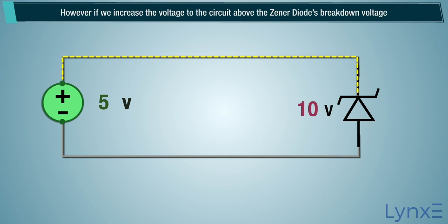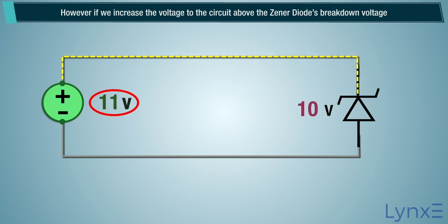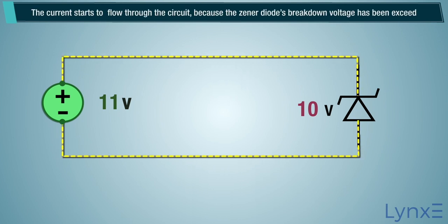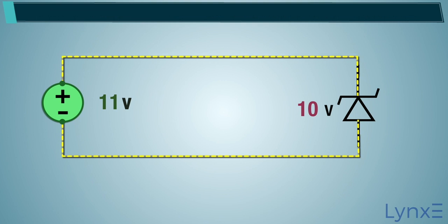However, if we increase the voltage to the circuit above the Zener diode's breakdown voltage, the current starts to flow through the circuit, because the Zener diode's breakdown voltage has been exceeded.